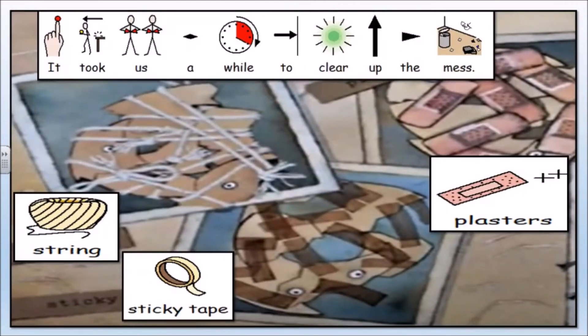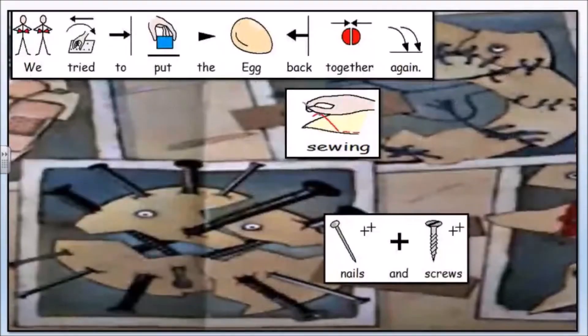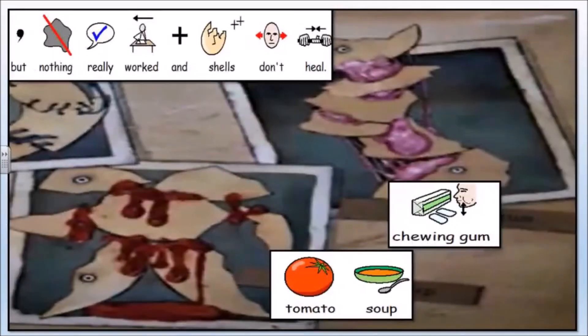String. Sticky tape. Plasters. We tried to put the egg back together again. Sewing. Nails and screws. But nothing really worked and shells don't heal. Chewing gum. Tomato soup.